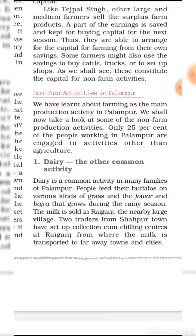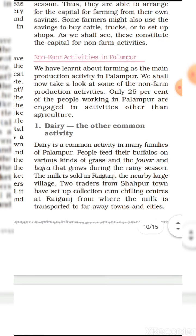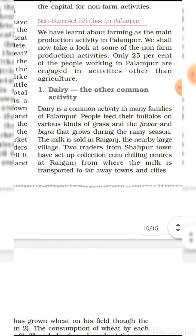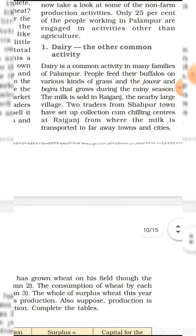Number one: Dairy. Dairy is a common activity in many families of Palampur. People feed their buffaloes on various kinds of grass and the jowar and bajra that grows during the rainy season. The milk is sold in Raiganj, the nearby large village. Two traders from Sahapur town have set up collection centers at Raiganj, from where the milk is transported to faraway towns and cities.